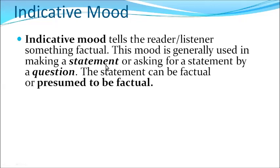From indicative mood we get something factual — a statement is produced and the verb gets the function of stating or narrating something. The verb can also be used to ask a question. From indicative mood we get either assertive or interrogative sentences. The statement can be a perfect fact with no doubt, or it can be a fact that is presumed — the speaker presumes it as a fact even if it may not be factual in actuality.